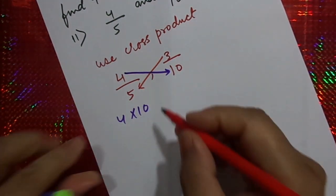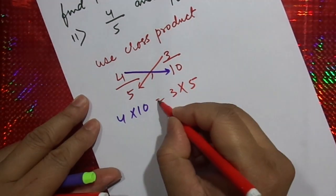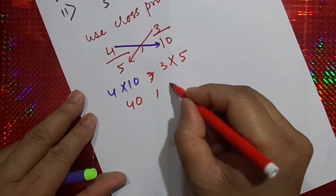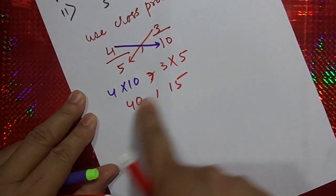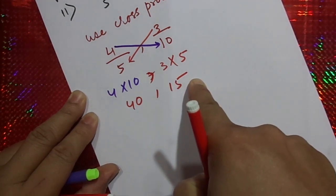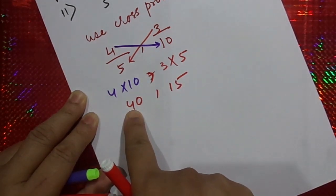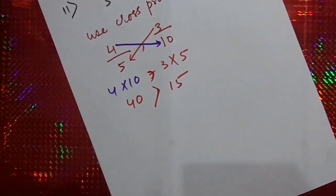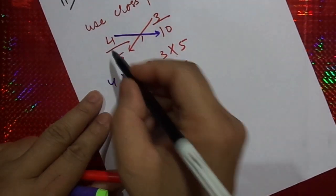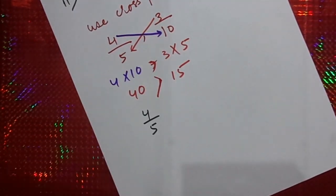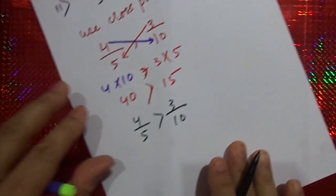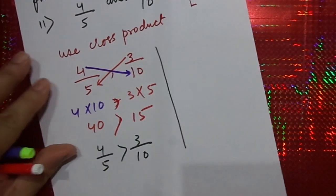So here we have 3 into 5. We find that 4 into 10 is 40, while 3 into 5 is 15. From these two values we can understand that 40 is greater. So if the right-hand side number is greater, then 4 by 5, which is towards your right-hand side, is greater than 3 by 10. This is the simplest rule which you can stick to.